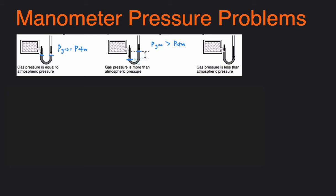We can solve the pressure of the gas by looking at the difference in height between the two levels. The pressure of the gas equals the pressure of the outside atmosphere plus the height difference, because that makes the pressure of the gas greater. On the other hand, if the atmosphere side is lower than the gas side, that means the atmosphere is pushing down more, so the pressure of the gas equals the pressure of the atmosphere minus the height difference — making the gas pressure smaller.